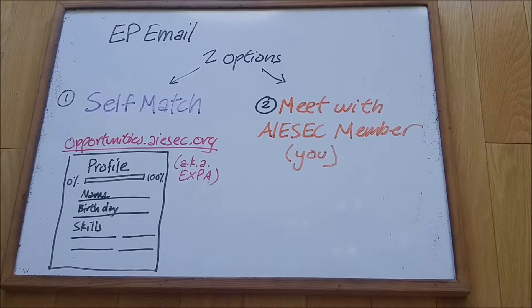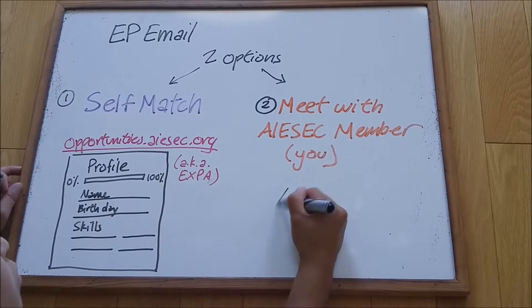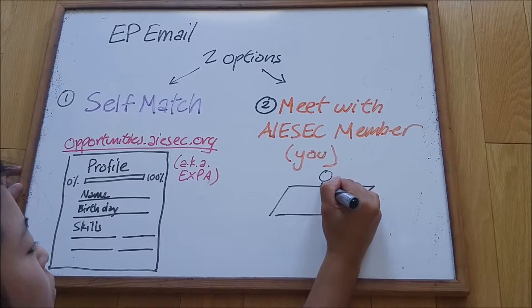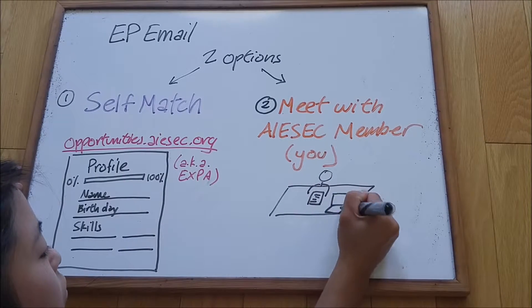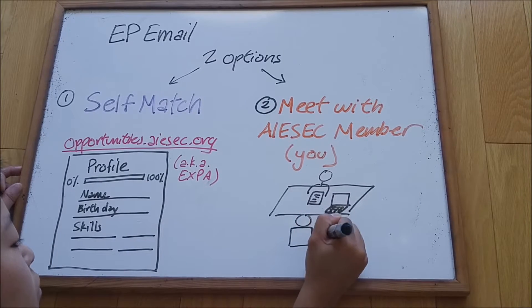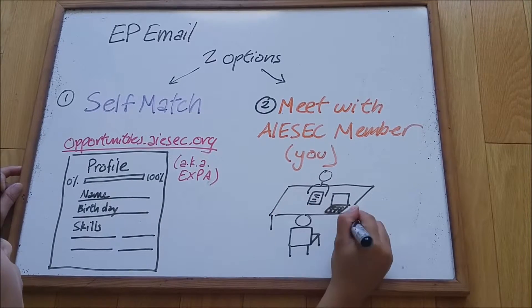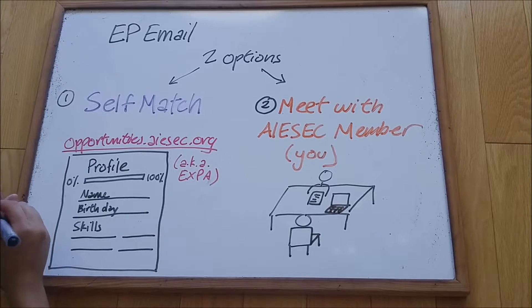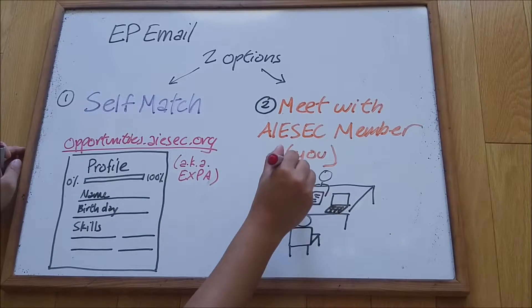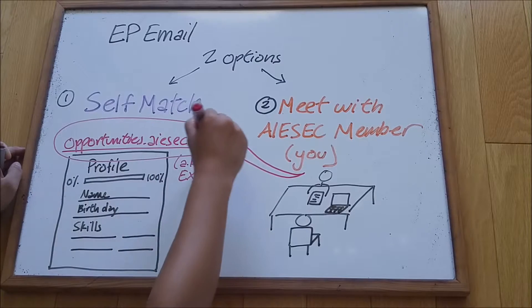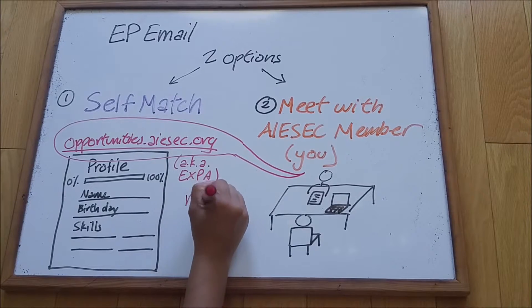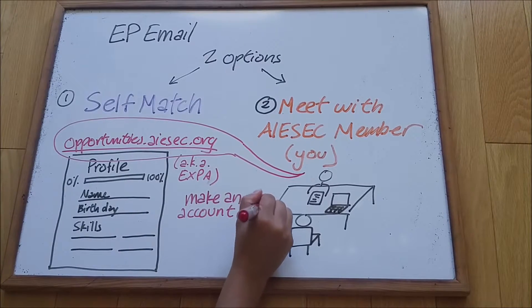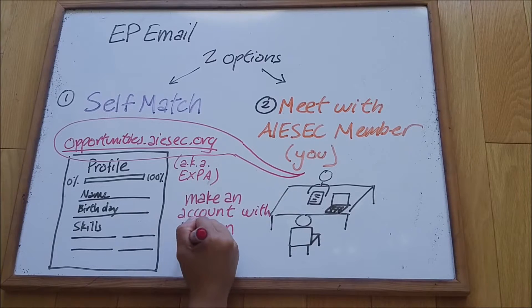The second option is if you meet with an AIESEC member, and it's going to go like how a consultation works. You'll sit down with your lead and you'll explain to them what expa is, answer any of their questions, and actually sit down to make an account with them and teach them how to use expa. You'll also be giving them the opportunities.aiesec.org link there, so making an account together with the lead.